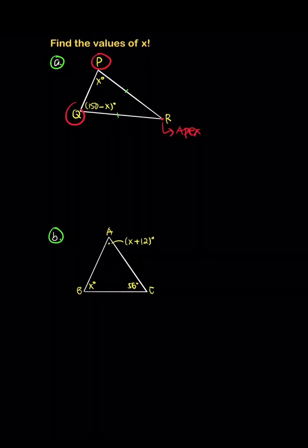Hello everyone, let's solve this question. We're moving to isosceles triangles. In isosceles triangles, we know that the base angles are equal.